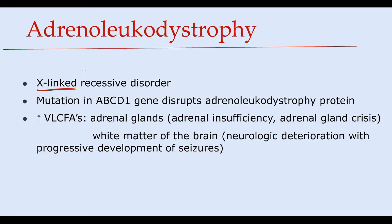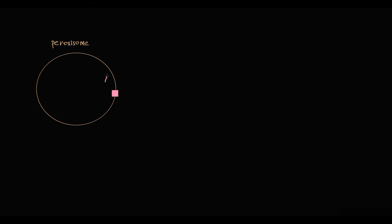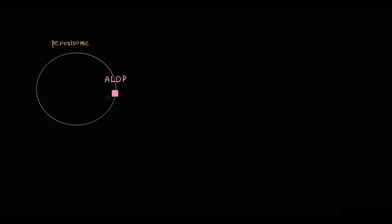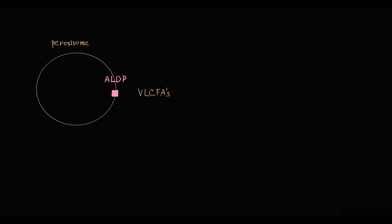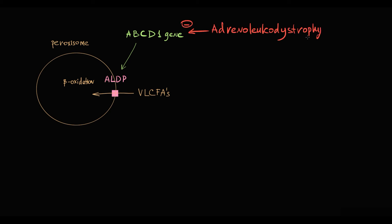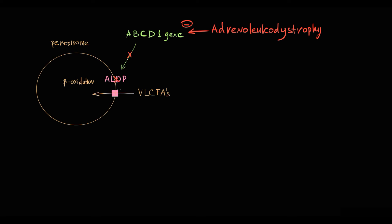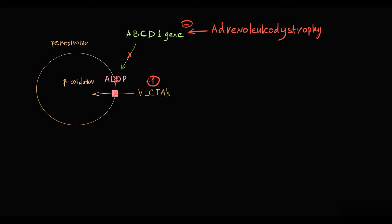The second pathology is adrenoleukodystrophy (ALD), an X-linked recessive disorder — so boys are at risk — caused by a mutation in the ABCD1 gene that disrupts the function of the ALD protein. Located on the peroxisomal membrane, the ALD protein transports very long-chain fatty acids into the peroxisome for peroxisomal beta-oxidation. Mutation in ABCD1 results in dysfunctional ALD protein that cannot transport VLCFAs from the cytosol into the peroxisome. The name reflects where accumulation occurs.